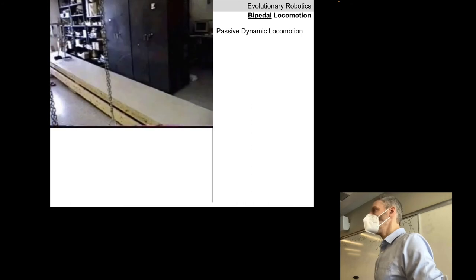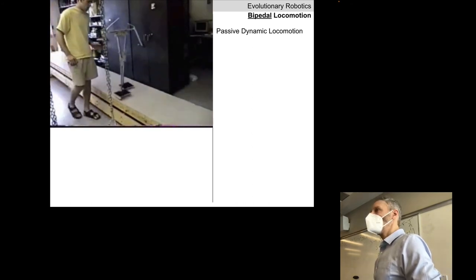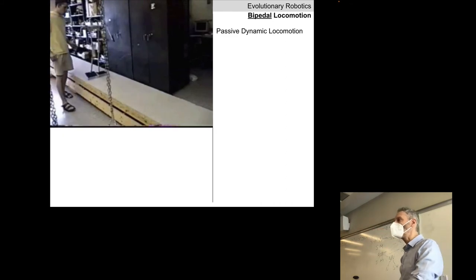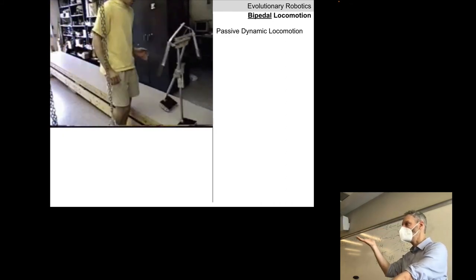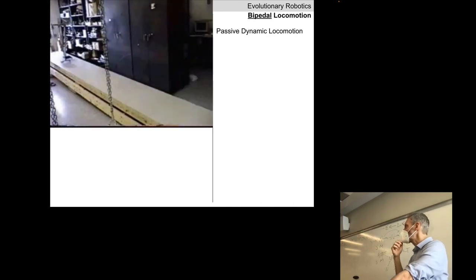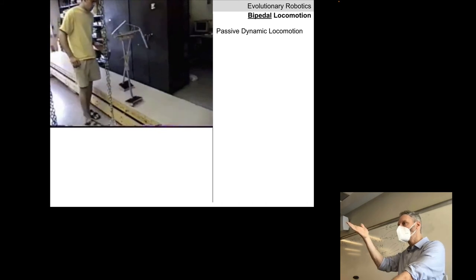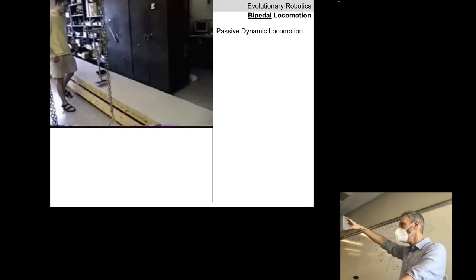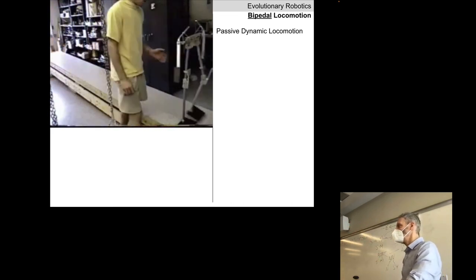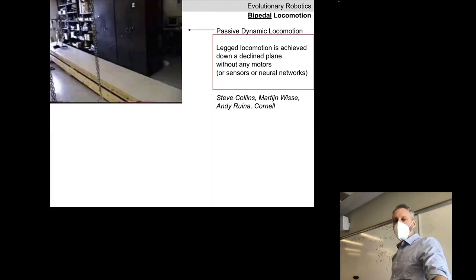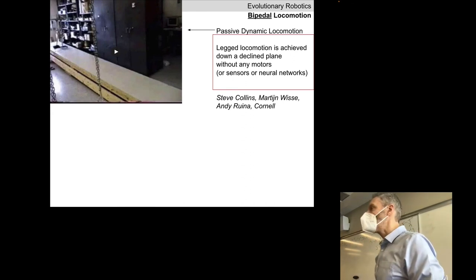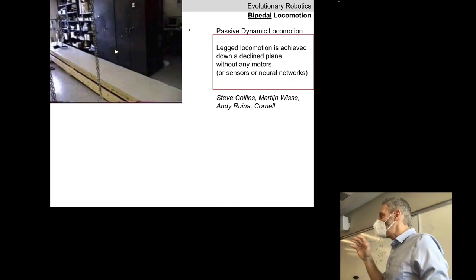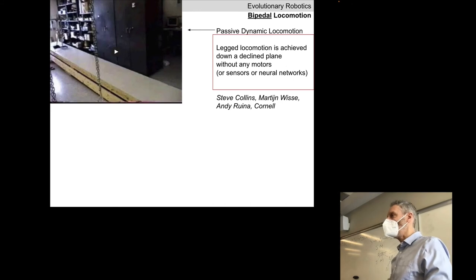Where does the energy come from if it has no batteries or motors? Gravitational potential energy — we place the robot at the top of the decline, increasing potential energy, and as it moves down the decline, if designed correctly, it translates potential energy into kinetic energy. Not that different from putting a ball at the top of a slope and watching it accelerate. This is why bipedal locomotion is so energy efficient — it exploits the same principle.